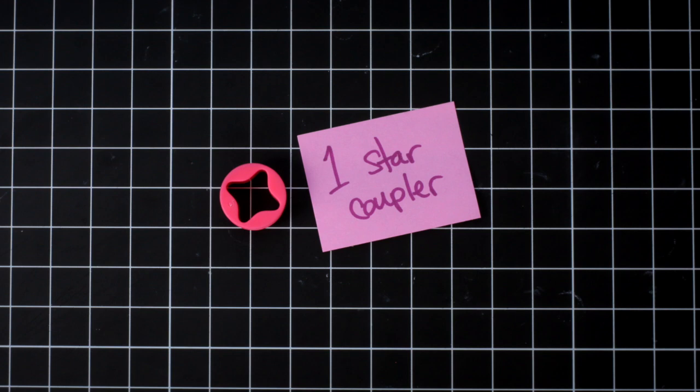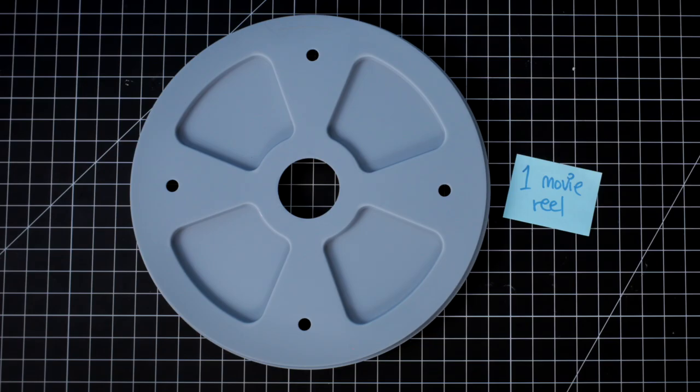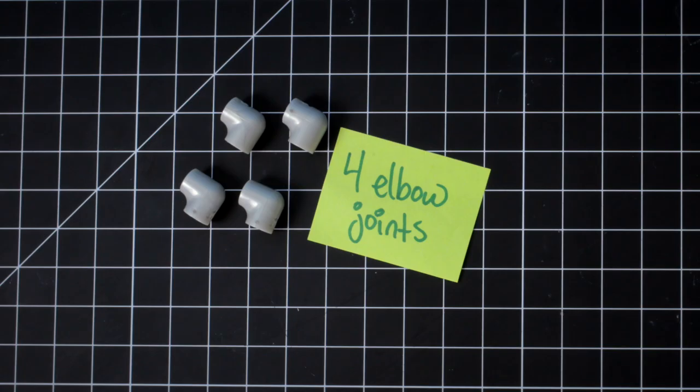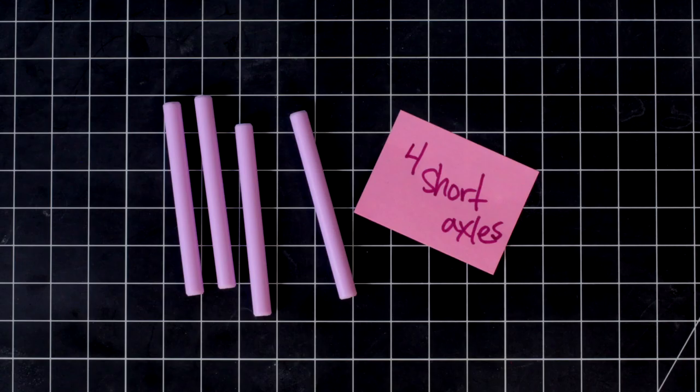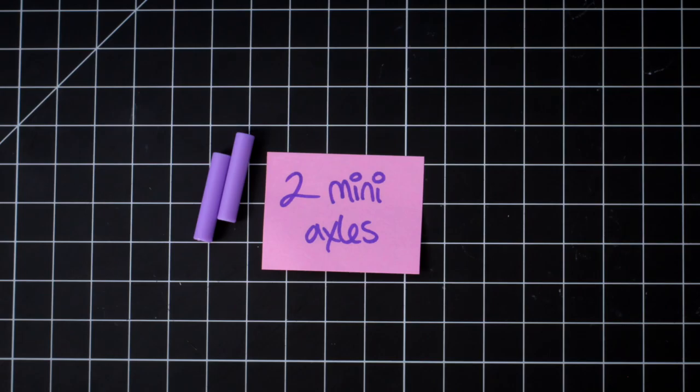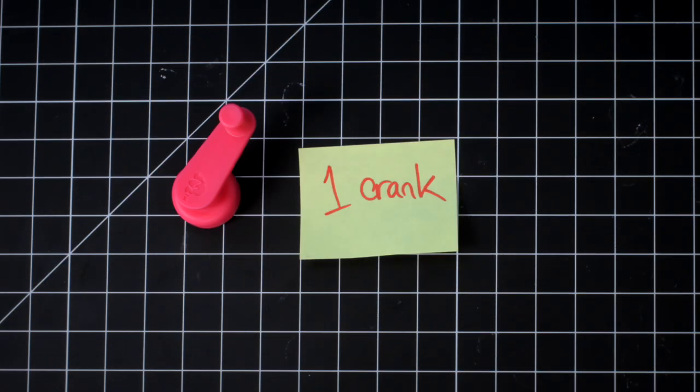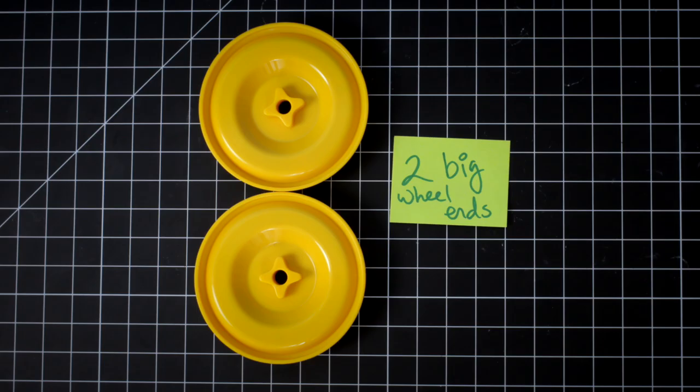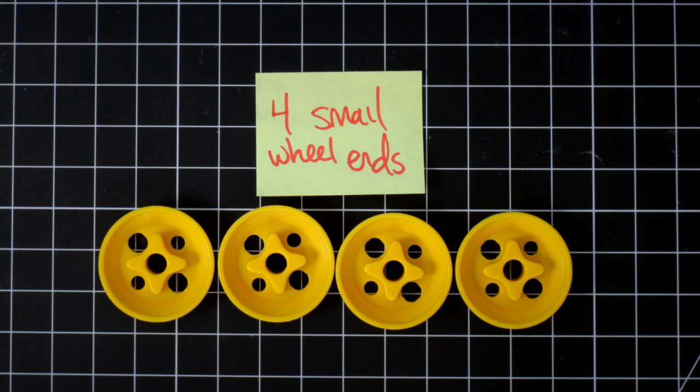One Star Coupler, One Movie Hoop, One Movie Reel, Four Elbow Joints, Two Long Axles, Four Short Axles, Two Mini Axles, One Crank, Two Mini Peg Boards, Two Big Wheel Ends, Four Small Wheel Ends.